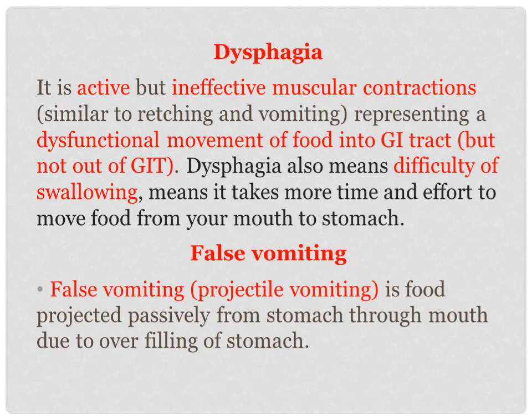Vomiting also requires differentiation from dysphagia. Dysphagia is active but ineffective muscular contraction, similar to retching and vomiting, representing a dysfunctional movement of food into the GI tract but not out of it. Dysphagia means difficulty of swallowing — it takes more time and effort to move food from the mouth to the stomach. In dysphagia, actual vomiting is not there, but the animal makes actions just like vomiting, and frequent nausea will be present.